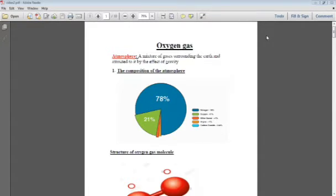And now listen, oxygen. Here we talked first about the atmosphere, and we said that the atmosphere is a mixture of gases that are surrounding the Earth, and they are attracted to the Earth by the effects of gravity.